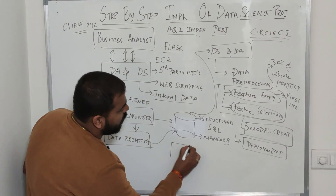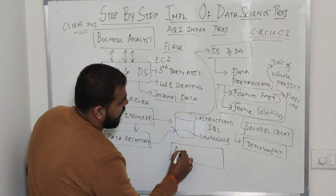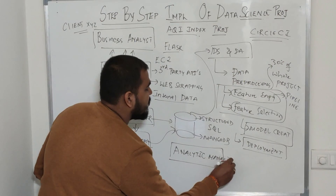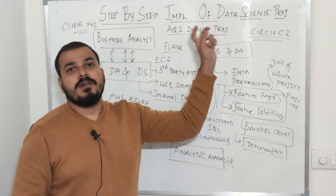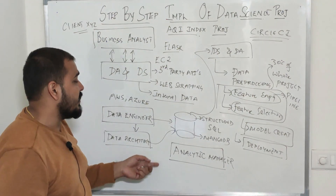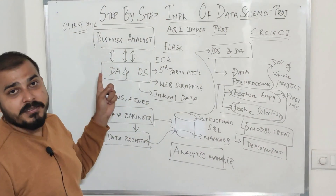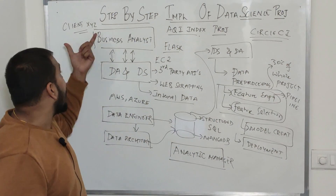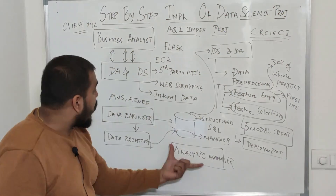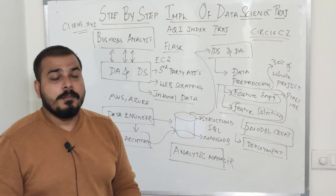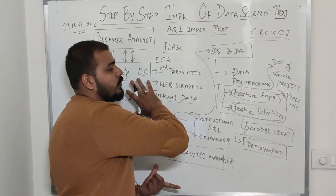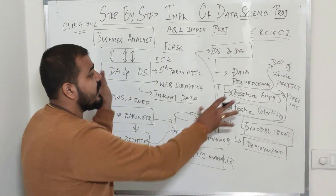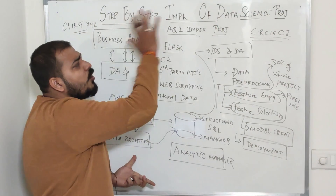There is one more important but rare role called the analytics manager. This person manages the team of data scientists and data analysts, designs the sprints by deciding which stories go into which sprint, communicates with domain experts to understand requirements, and drives the overall completion of the project by working with all the people involved.